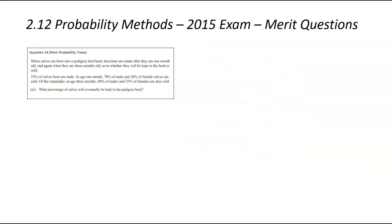We're now on to question number 14. I've given us a hint relates to probability trees here. We've been asked what percentage of calves will eventually be kept into the pedigree herd. This was quite a complicated probability tree. So let's break down all this information. When calves are born into the herd, a decision is made after one month and then after three months as to whether or not they'll be kept or sold. 55% of the calves born are going to be male at one month stage. So we have 0.55 male and 0.45 female.